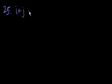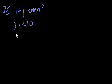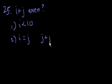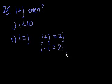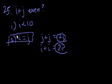Problem 25. If i and j are integers, is i plus j even? Statement 1 says i is less than 10 — that tells me nothing, it's useless. Statement 2 says i equals j. Well, that's interesting. If i equals j, then i plus j equals j plus j equals 2j. Or equivalently, i plus i equals 2i. In either case, the result is a multiple of 2, and since i and j are integers, it has to be even. Statement 2 alone is sufficient, and statement 1 is useless.